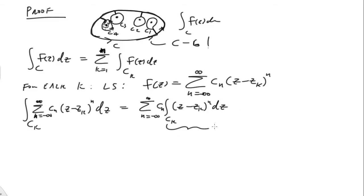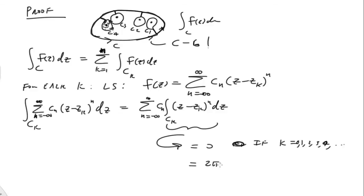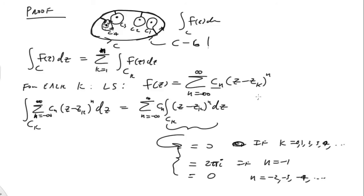We know that the integral of each term is equal to zero if n equals 1, 2, 3, 4, or any positive integer, and also zero for n equals negative 2, negative 3, negative 4, and so on to negative infinity. It's equal to 2πi if n equals negative one. That particular coefficient associated with n equals negative one is the one that picks up a non-zero value around any simple closed contour. So the answer will always be 2πi times c_{-1}.